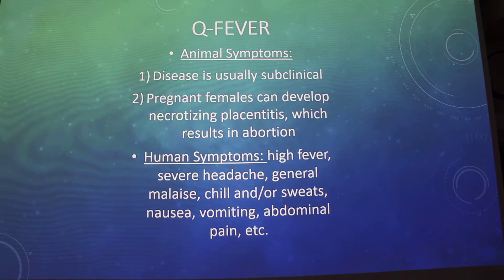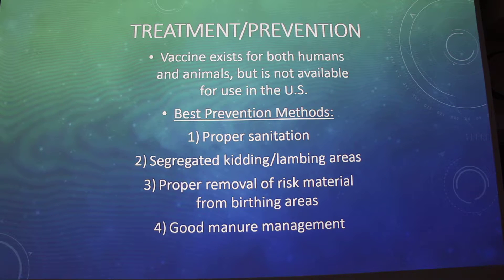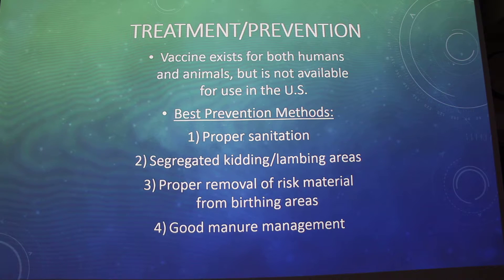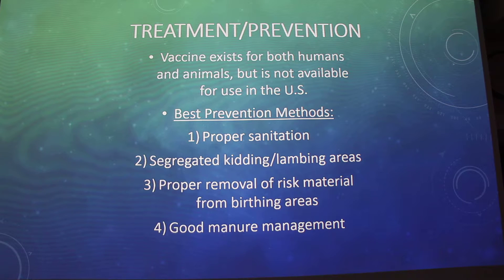In humans, you get high fevers, severe headache, general malaise, chills and/or sweats, nausea, vomiting, abdominal pain, etc. For treatment and prevention: there is a vaccine that exists for both humans and animals, but it's not available for use in the U.S. — it was developed in Australia but hasn't become commercially available here. Best prevention methods are proper sanitation, segregated kidding and lambing areas, proper removal of risk material from birthing areas, and good manure management.